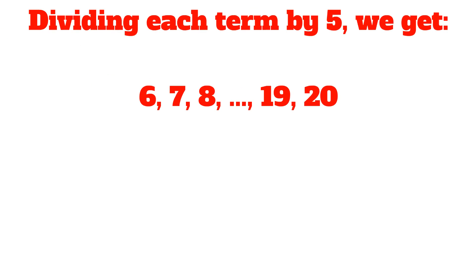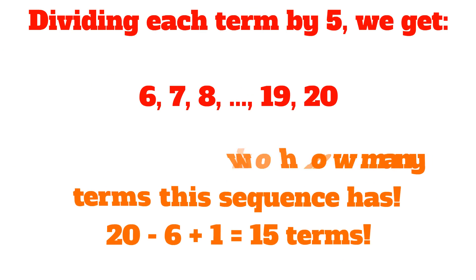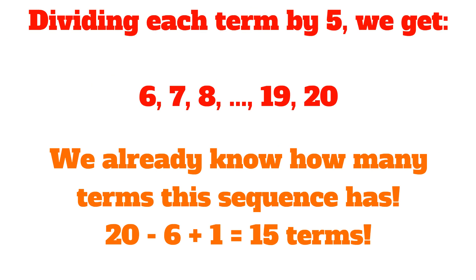We get 6, 7, 8, all the way to 19, and 20. We already know how many terms this sequence has. 20 minus 6 plus 1 gives us exactly 15 terms. Here we used our b minus a plus 1 formula.